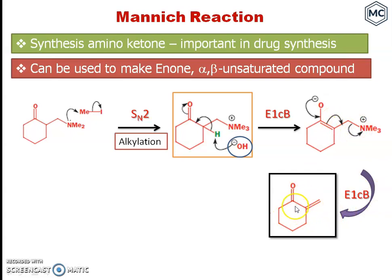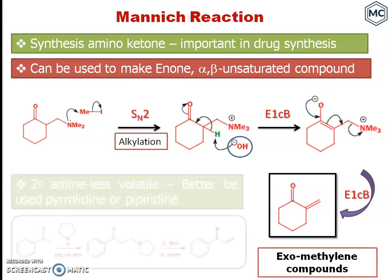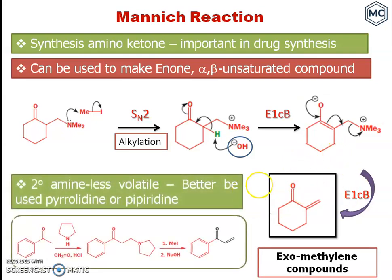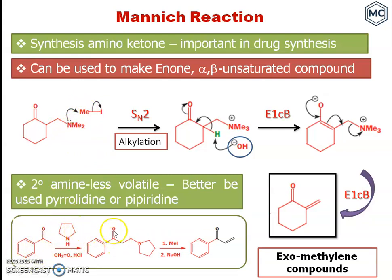The acidic hydrogen is removed and finally the -NMe₃ part is eliminated by a mechanism called Hofmann elimination, to form a compound. This is actually a methylene compound — a hexamethylene compound. In this case, if you are using secondary amine, it is less volatile and cannot be easily eliminated, so it is better to use pyrrolidine or piperidine as the secondary amine. You get the Mannich base, and finally on alkylation and with base you get an eliminated product — an enone.